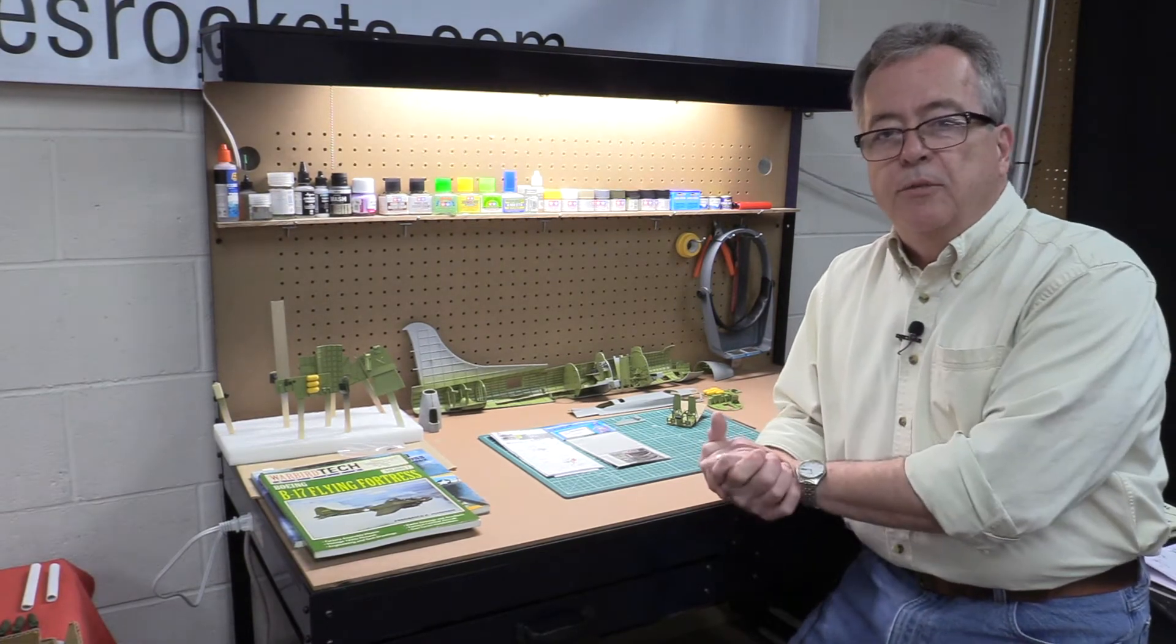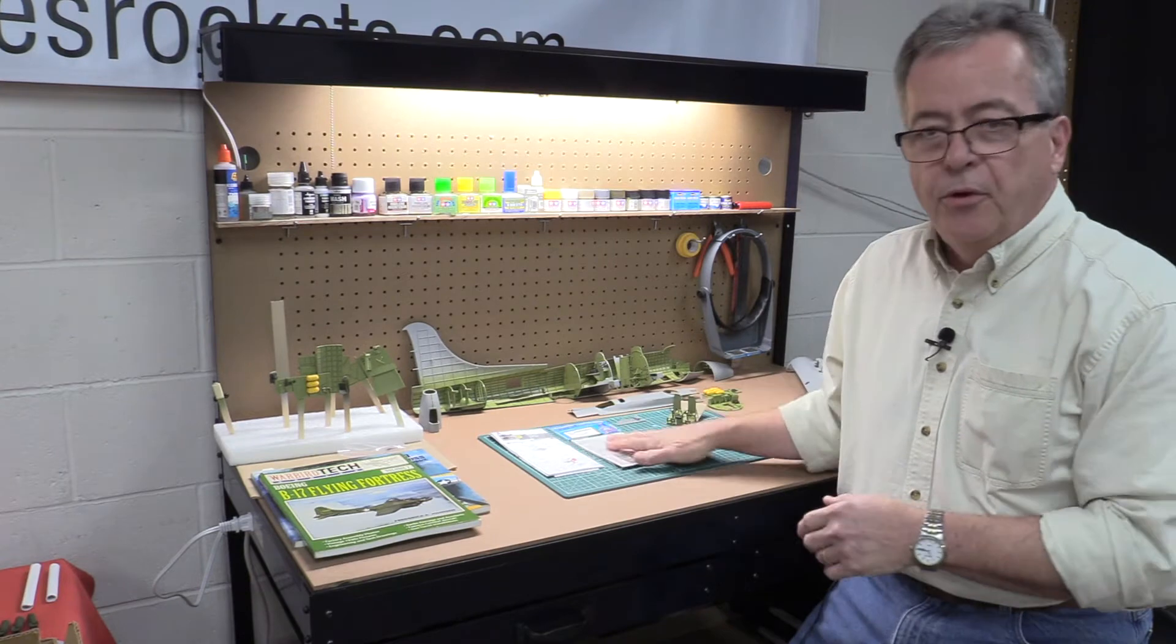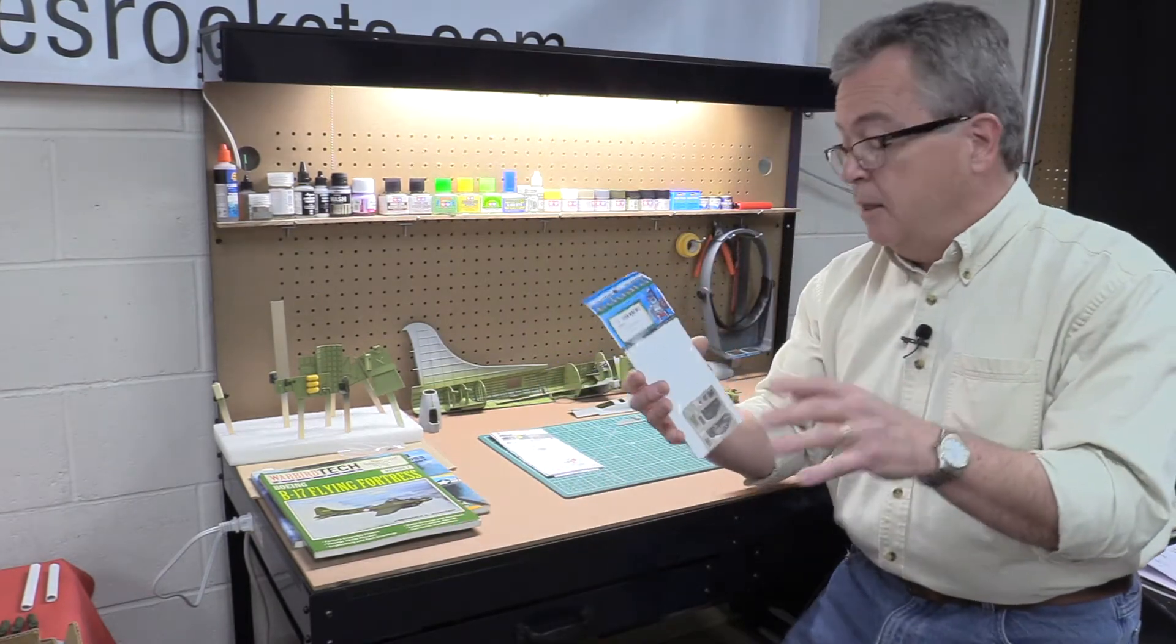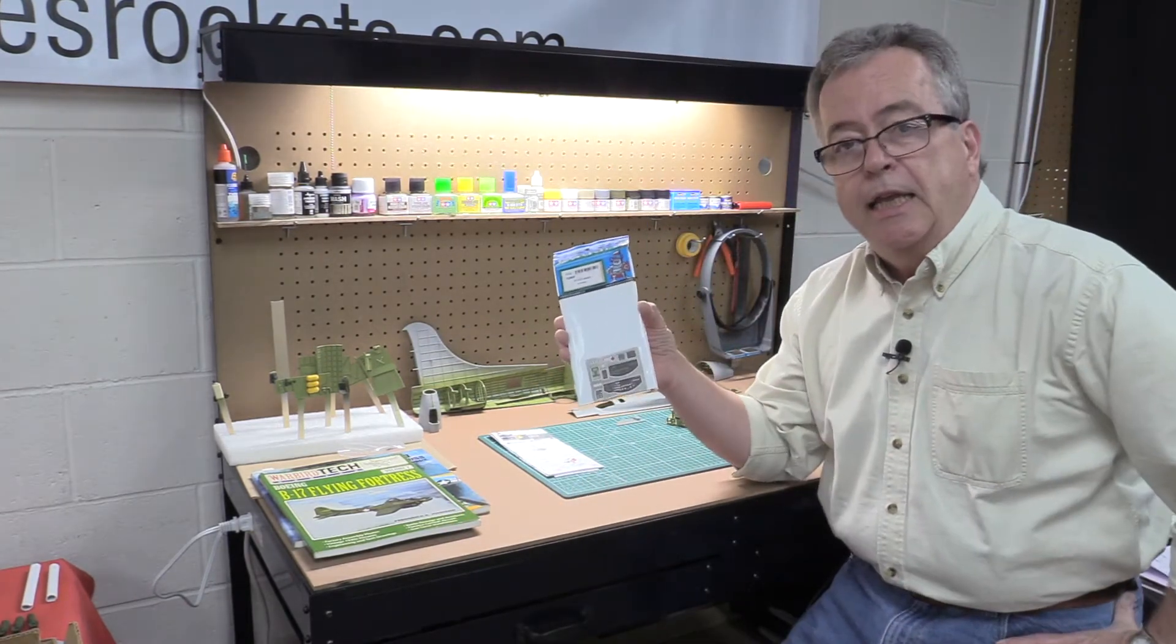Let's take a quick look at installing some photo etch parts into this 1:32 scale B-17. I have some Eduard photo etch here, this is the interior set for the B-17 for the cockpit and I thought we'd take a look at putting in the instrument panel.